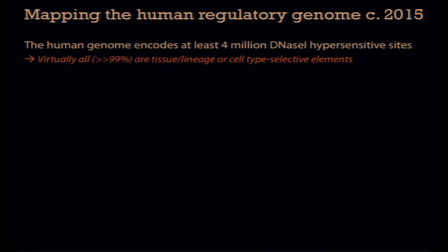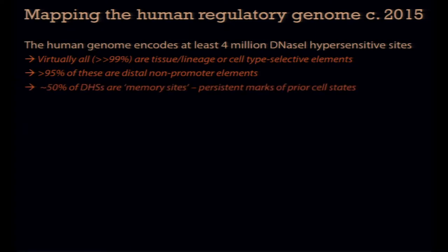Virtually all of these sites show some degree of tissue or lineage selectivity, some of them fairly extreme. The vast majority of these elements are in the distal non-promoter compartment, though that still leaves a lot in the promoter compartment — those genes have many alternative promoters that are tissue-specific. When you look at DNase I data, you are looking at a generic snapshot of where regulatory features are encoded in a particular cell type, but also at a compartment that has a capacity for memory: any given site is either active in that cell type, potentially active and primed, or a remnant of prior activity that exists as a memory.